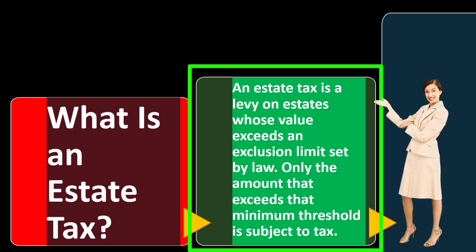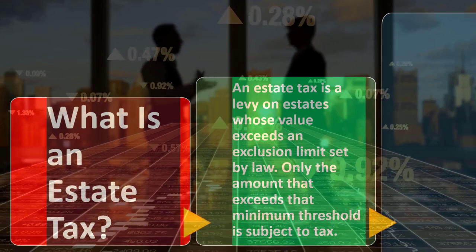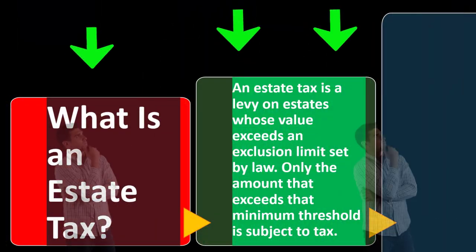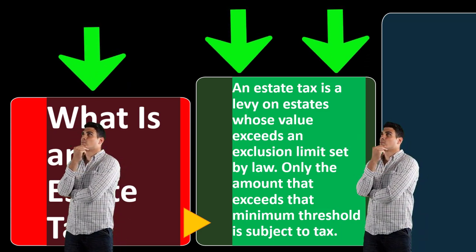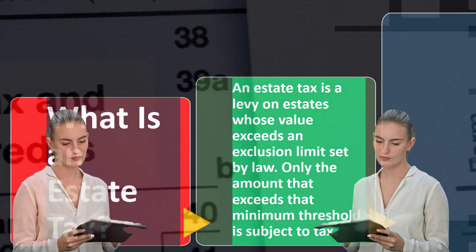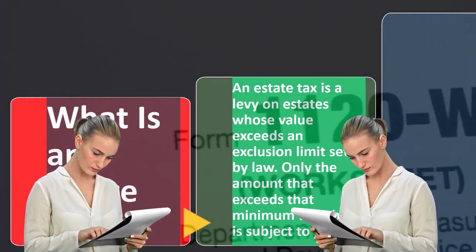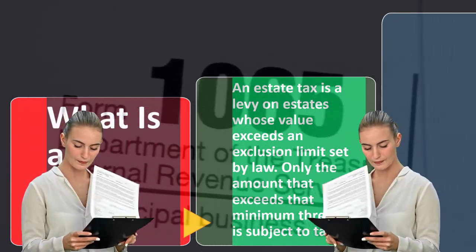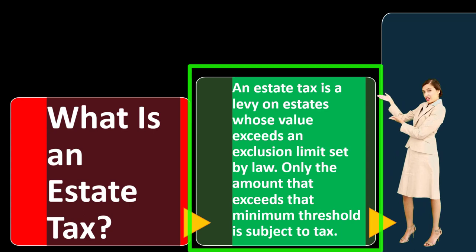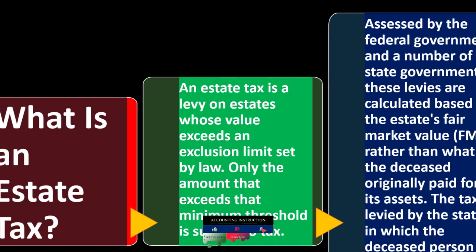Estate taxes are basically a death tax. You compile the assets for the individual at the point of death — what we call the estate, assets and liabilities — determine how large that value is, then compare it to an exclusion to see whether it's subject to an estate tax. The estate tax would typically be applied to more wealthy individuals who have a fairly substantial estate at death. In America we typically think of income tax as the major form of taxation, so the estate tax is kind of like a double tax because it taxes earnings that have already been taxed.